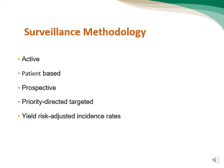KAUTI surveillance methodology is very similar to other device-associated infection surveillance. It involves an active approach, meaning we must actively monitor KAUTI events. It is patient-based, requiring accurate documentation of both catheter-related details and patient symptoms, and not only relying on urine culture results. Additionally, it is prospective, meaning surveillance must begin while the patient is still in the hospital and catheterized — we cannot do this retrospectively. Moreover, it is priority-directed and targeted, meaning surveillance efforts are concentrated on specific areas such as ICUs, rather than attempting to cover the entire hospital.